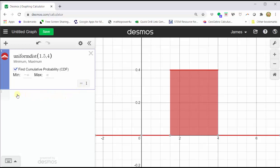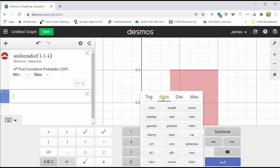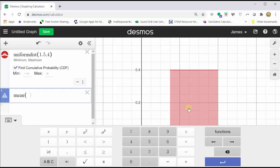And now let's find the mean and standard deviation. Click in cell two, click functions, click statistics. Click mean to find the mean.